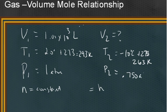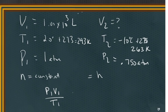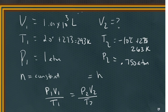It's 0.750 atmospheres. So the relationship here then is that P1 V1 over T1 is equal to P2 V2 over T2. So we're solving for V2. So we can plug in all of the other known states.